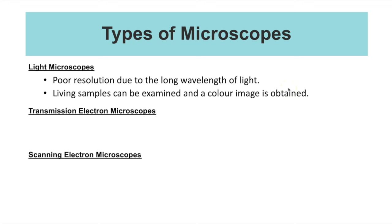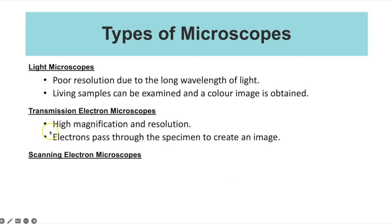Electron microscopes have higher magnification and resolution because electrons used to create the image have a shorter wavelength compared to visible light. For a transmission electron microscope, the electrons pass through the specimen — that's why it's called transmission. Different parts of the specimen absorb different amounts of electrons, which is how you get the different shades of grey to create the image.